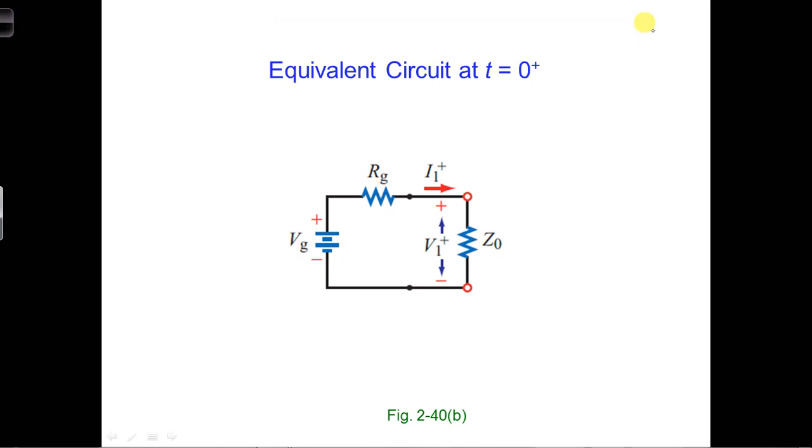We alluded to this earlier. Looking back on the equivalent circuit for the generator connected to a lossless transmission line at time t equals 0.